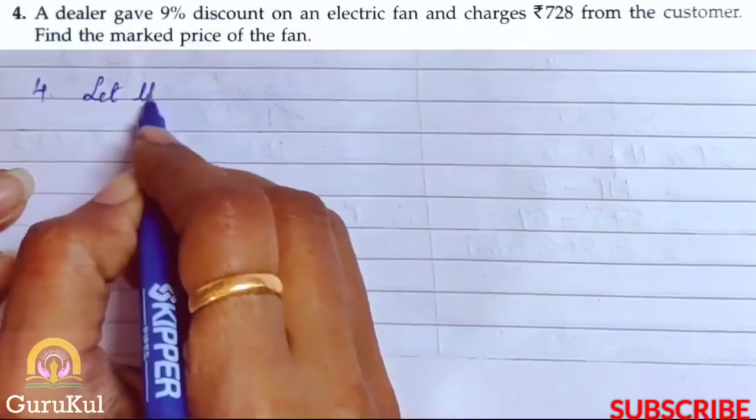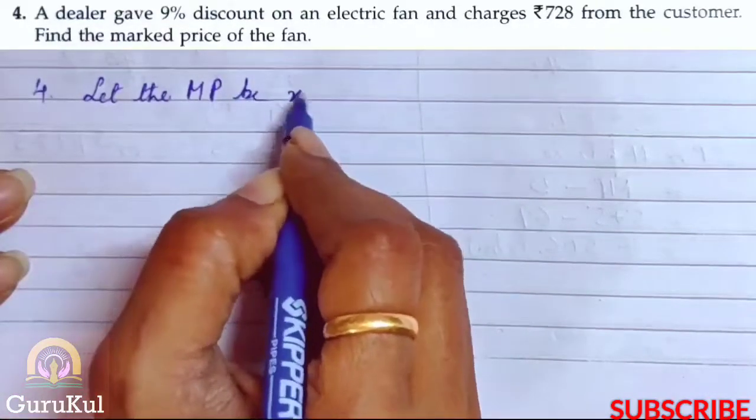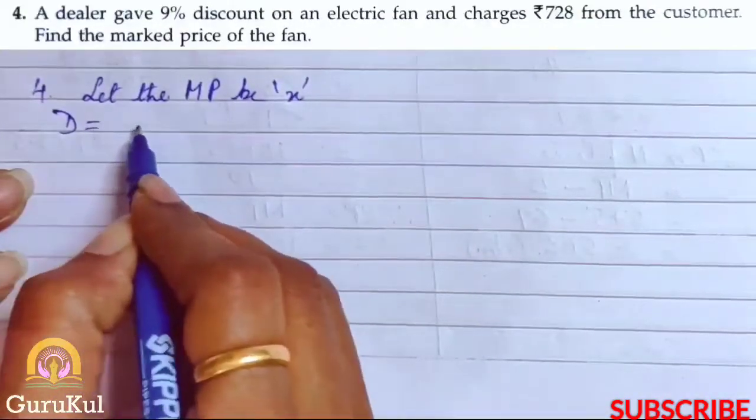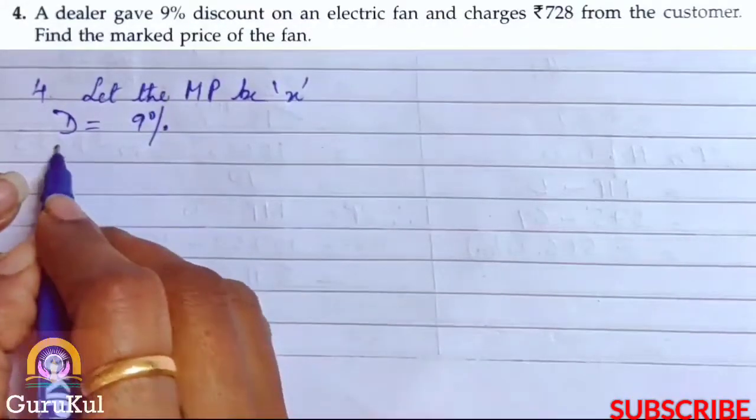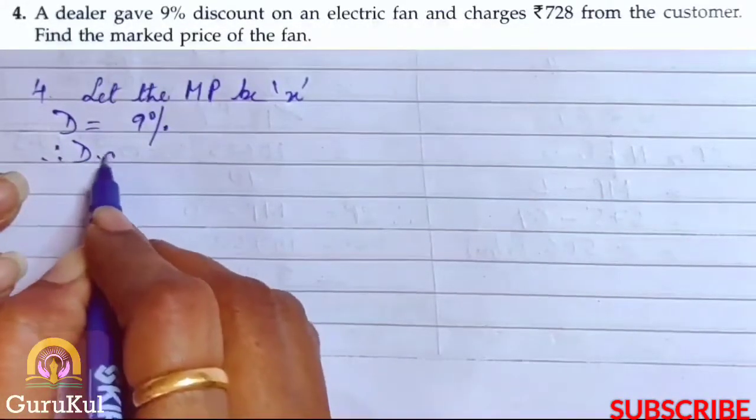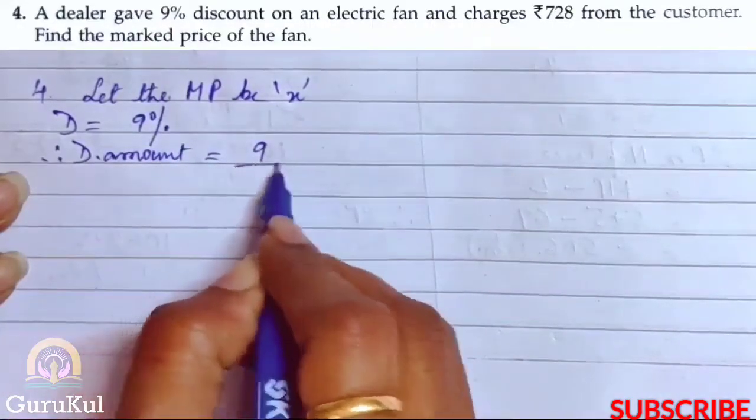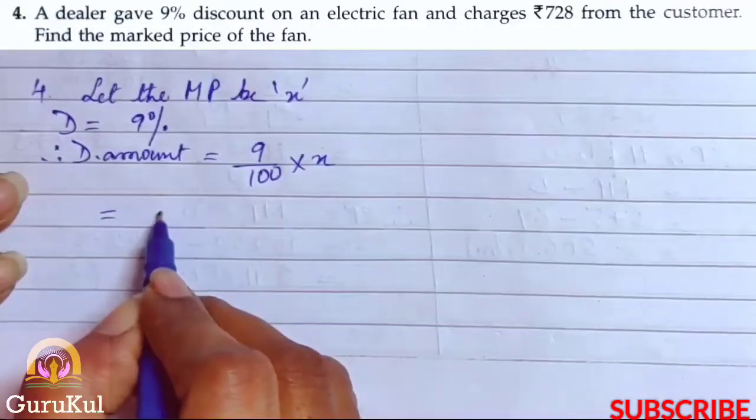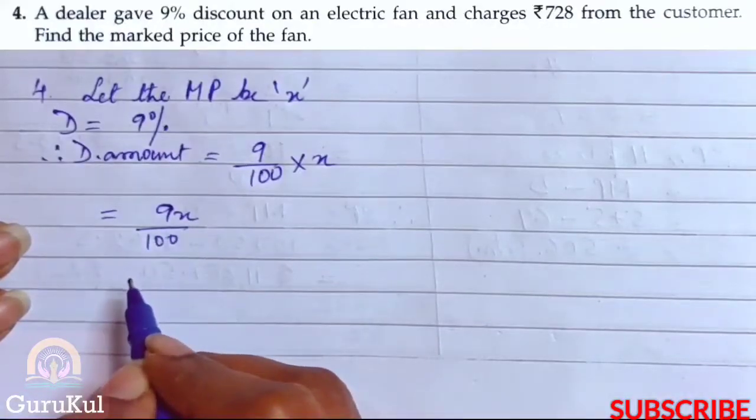So let the marked price be X. Discount kitna diya? Usne diya 9%. Therefore discount amount will be 9% of X. That gives us 9X by 100.